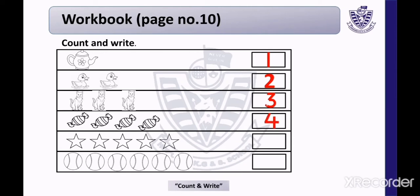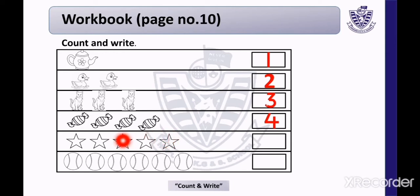Now look at the next row. This is a picture of stars. How many stars are there? Count with me — 1, 2, 3, 4, 5. There are 5 stars here. Now we will write number 5 in the given block.